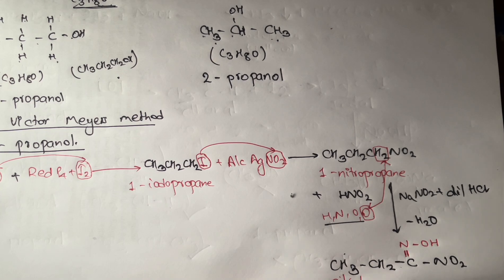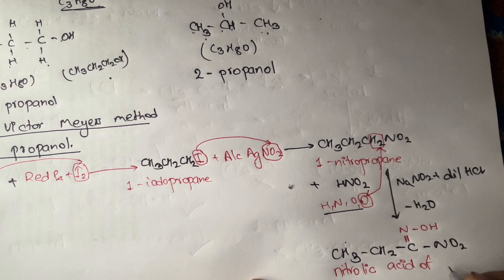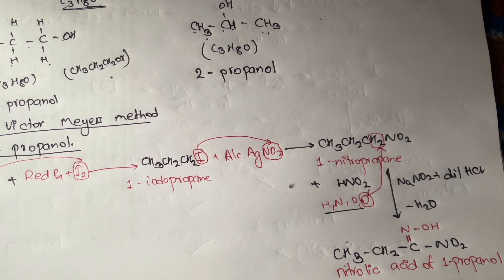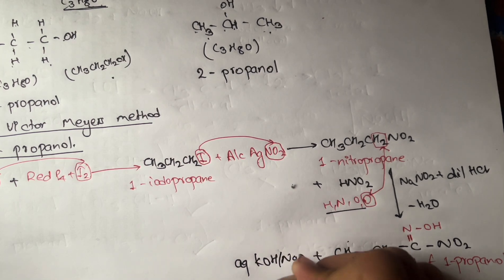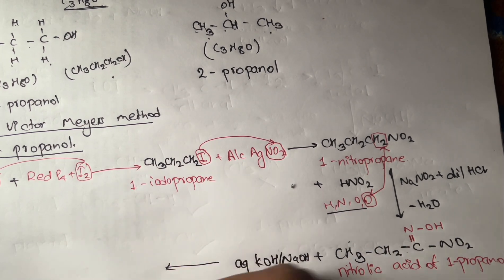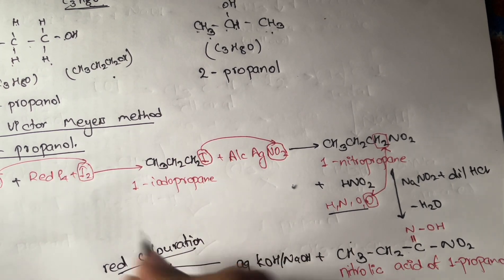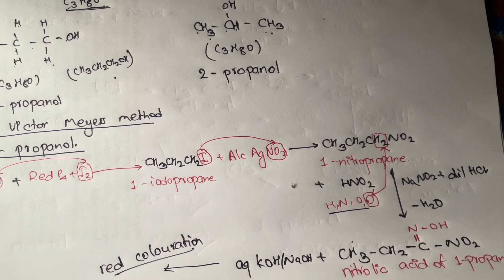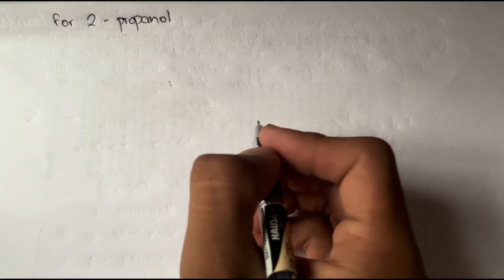The nitrolic acid from 1-nitropropane, on treatment with aqueous KOH (or NaOH), gives red coloration. So 1-propanol in the Victor Meyer method gives red coloration with KOH. This distinguishes 1-propanol. Now we move to 2-propanol.